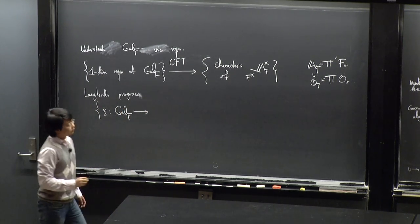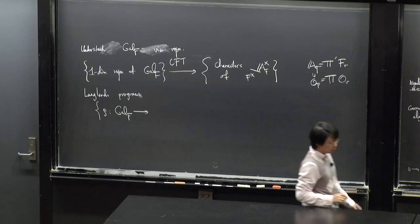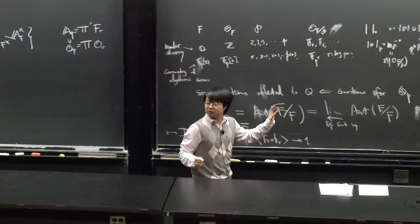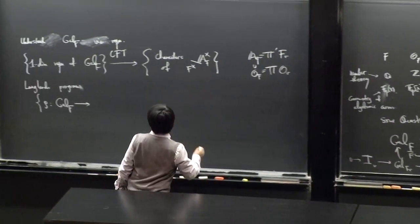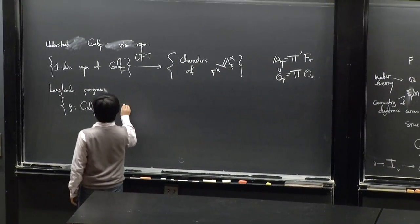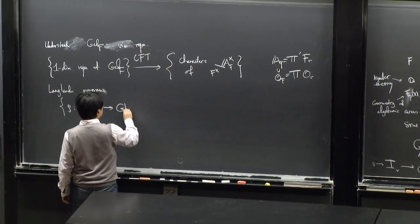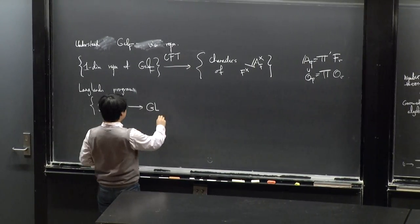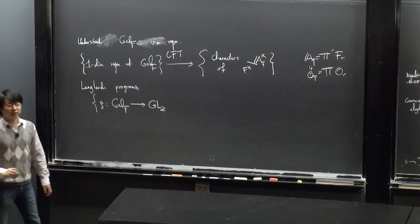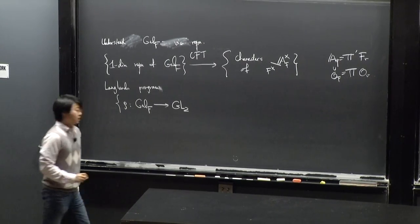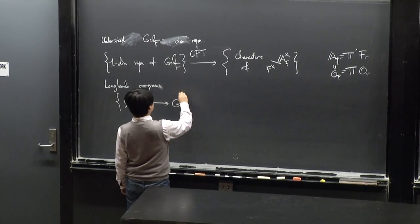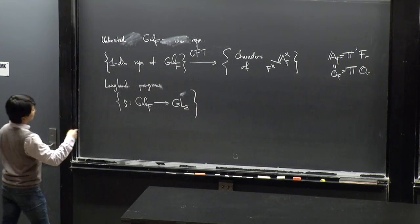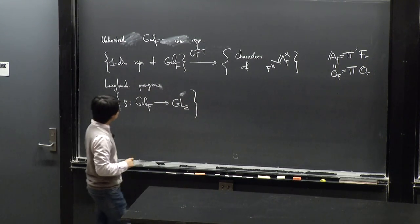To avoid complexity from general group theory, I would just consider two-dimensional representations — my group G will be GL₂. So we want to study representations of the Galois group to GL₂, plus some technical conditions.